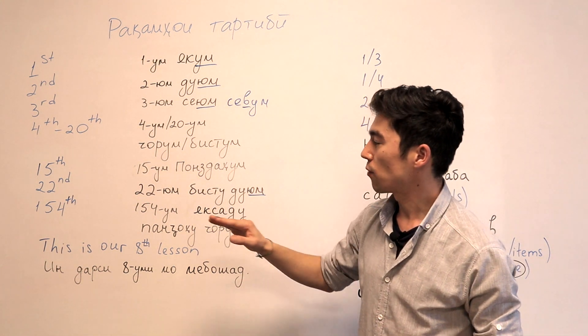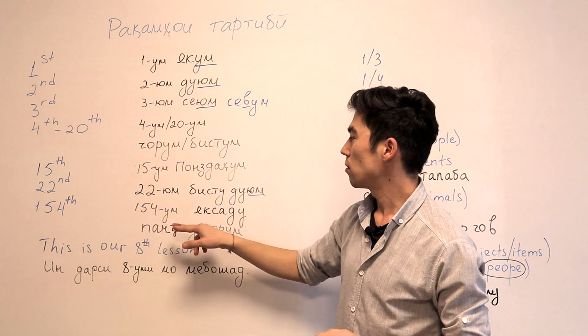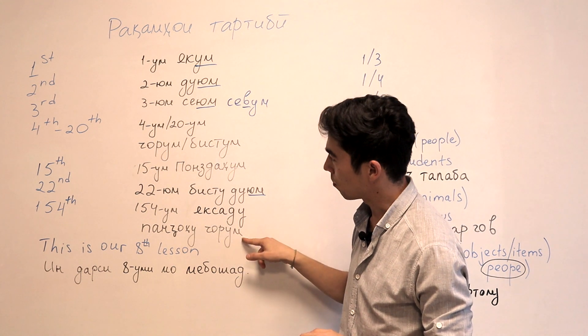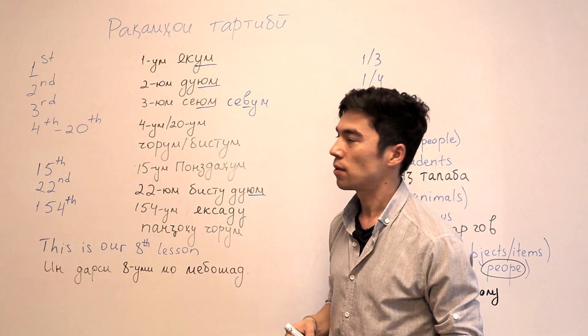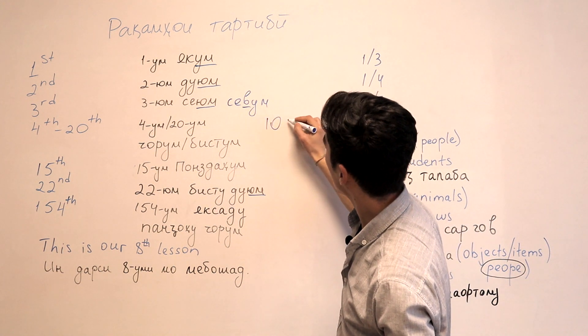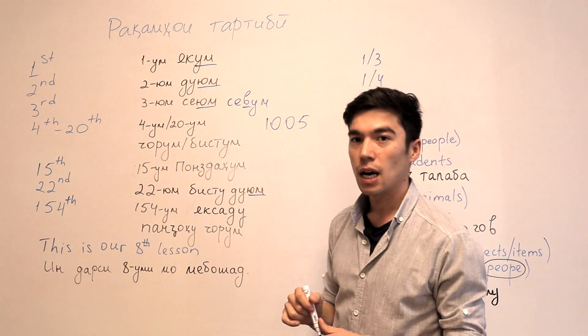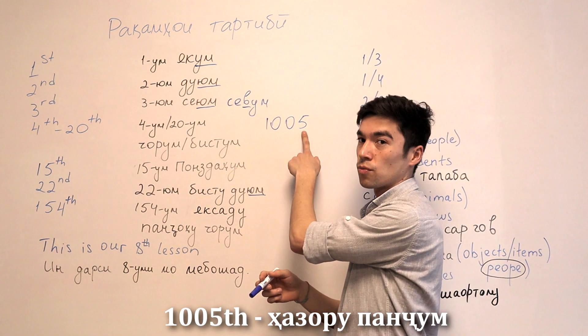Next one. For example, 154th. YAKSADU PANJOHU CHORUM. YAKSADU PANJOHU CHORUM. Let's say 1,005th, for example. HAZORU PANJOHUM. HAZORU PANJOHUM. Same.